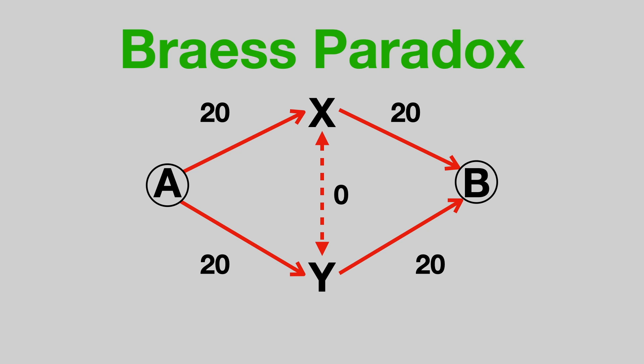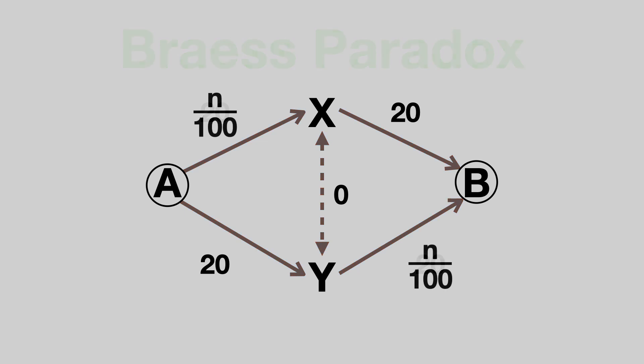This isn't actually a paradox at all. It just illustrates how people following their own self-interest can make everyone worse off. No one in this example has made a bad decision, except the person that built the new road. They've all chosen the fastest possible route, but this has led to a sub-optimal outcome.